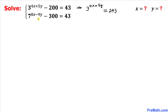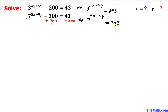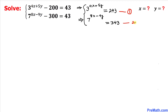Likewise, in the second equation, I am going to add 300 on both sides. The negative 300 and positive 300 cancel, so we end up with 7 to the power of 8x minus 9y equals 343. Let's call this equation 1 and equation 2 respectively.